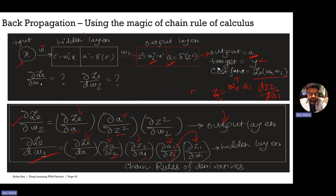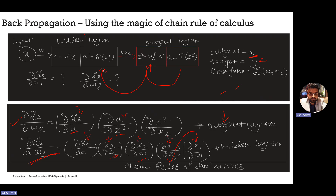We are moving in a backward direction — starting from the output, then moving towards Z2, then towards A1, then calculating the derivative with respect to W1. In forward propagation we move in the forward direction, and for backpropagation we calculate derivatives using chain rules moving backward. If this isn't clear, write it on pen and paper and try the chain rule by hand — the concept will become much clearer. You can also rewatch this video for a proper understanding.